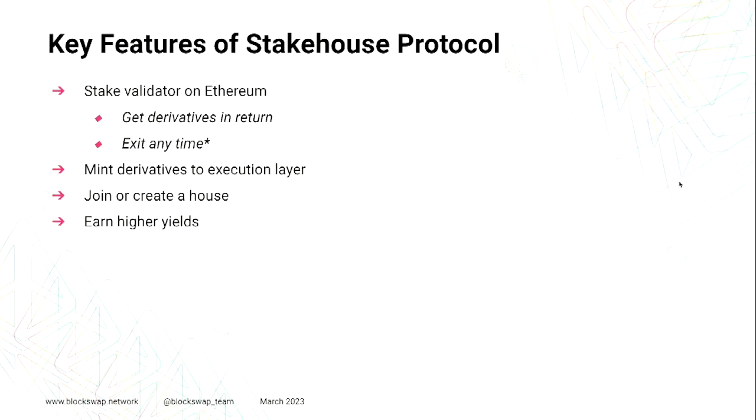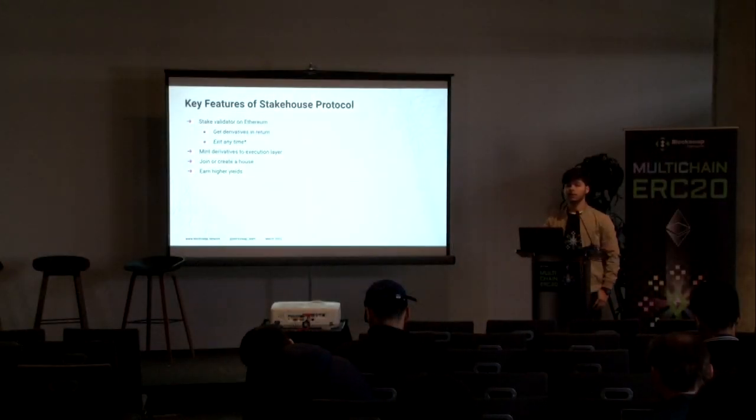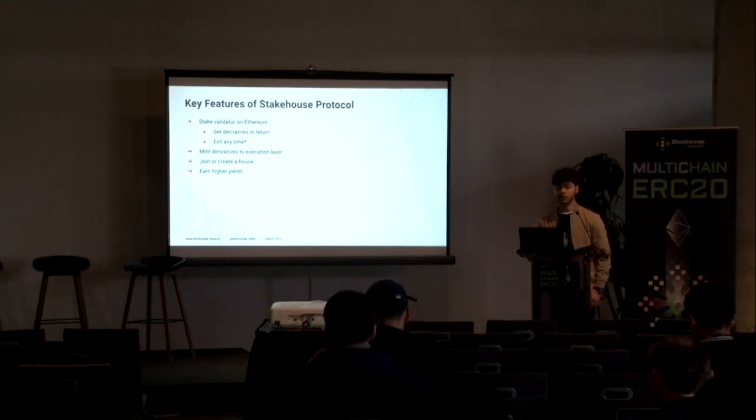As I said previously, Stake House protocol allows you to route your 32 ETH via the Stake House smart contracts to the Ethereum deposit contract. When a user comes in with 32 ETH, we expect them to have a BLS public key for the validator and an ECDSA address, which means a wallet they can connect on the execution layer. Stake House protocol takes care of both the execution as well as the consensus layer — on the consensus layer you will be running your validators and will mint your derivatives on the execution layer, so you will be able to use those derivatives in the DeFi protocols.